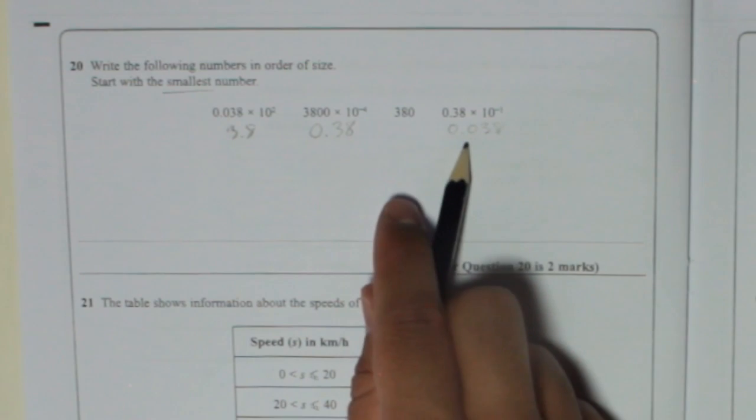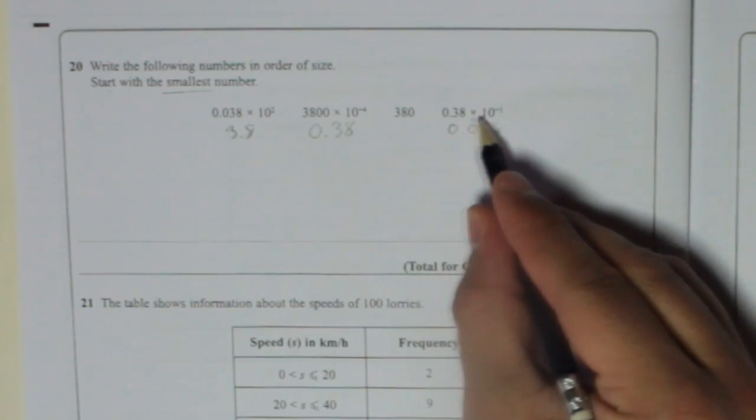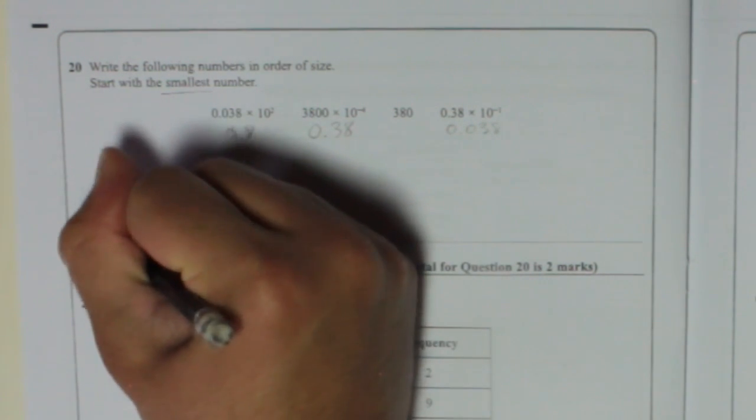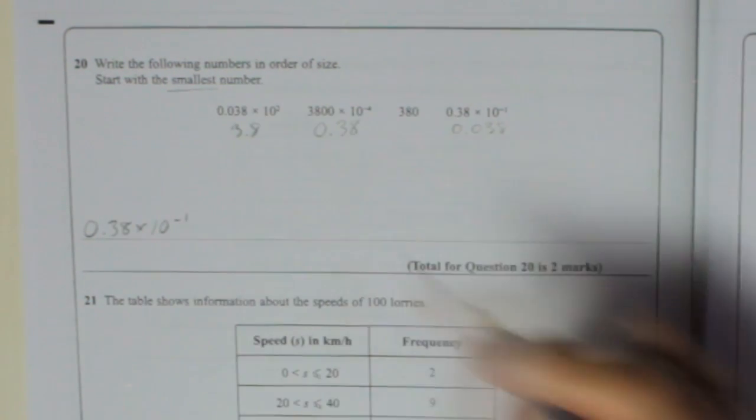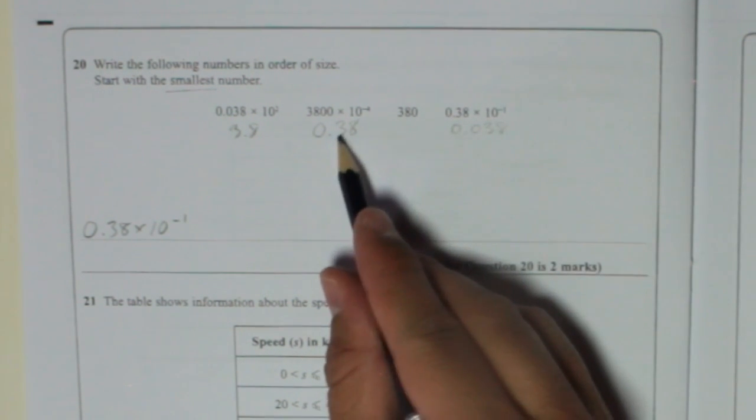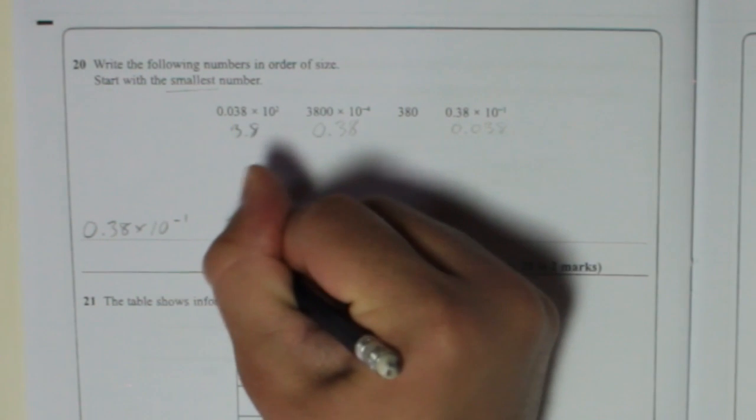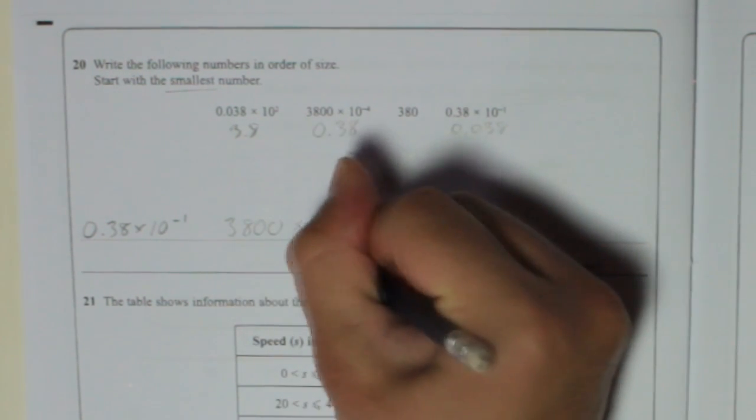So in order, smallest number first is 0.038, but I'm going to write down 0.38 times 10 to the minus 1. And then it's going to be this one, but I'm going to write the original, 3800 times 10 to the minus 4.